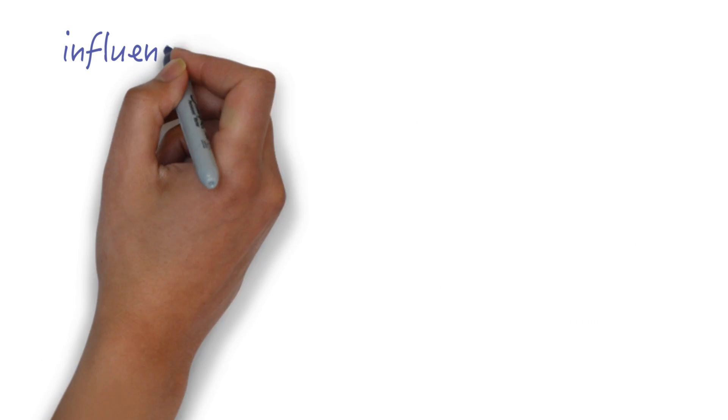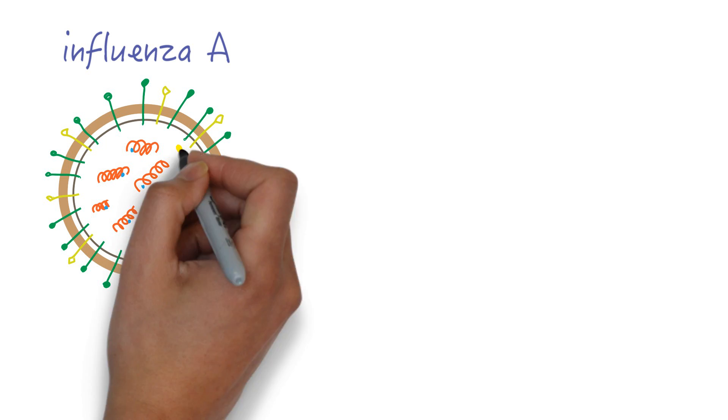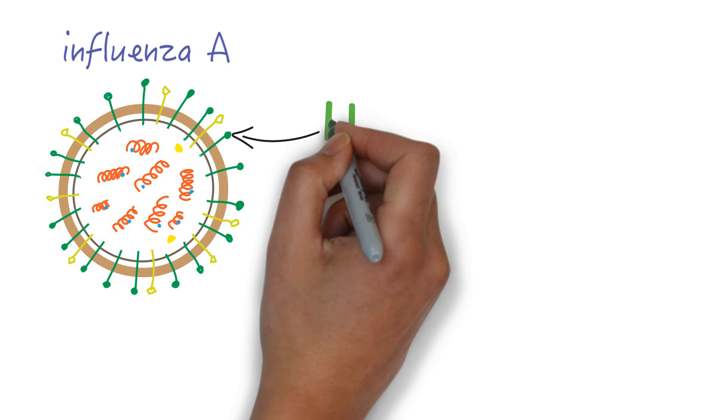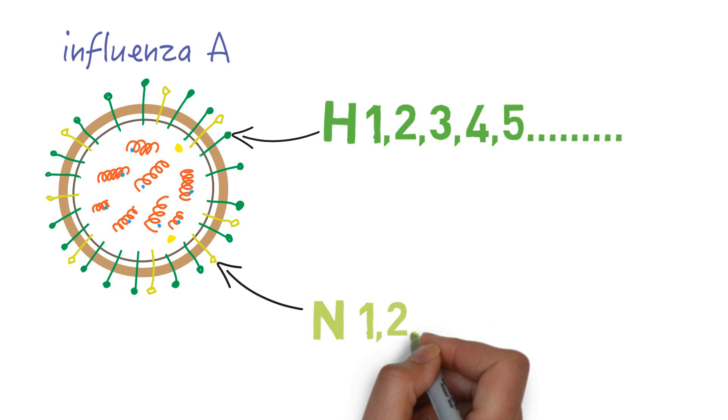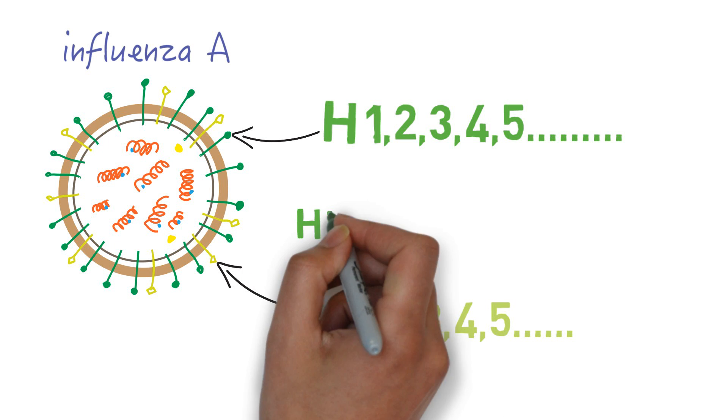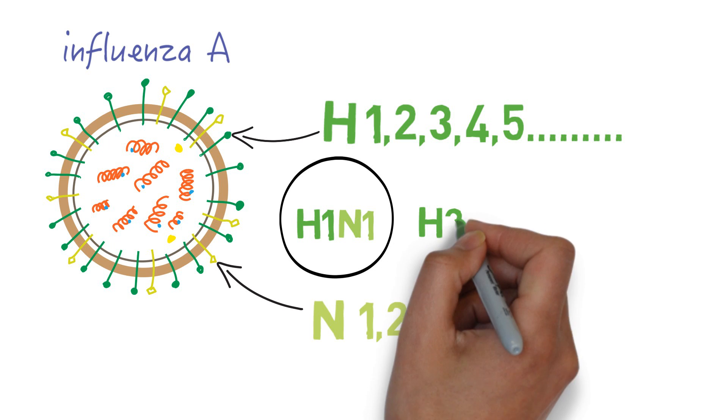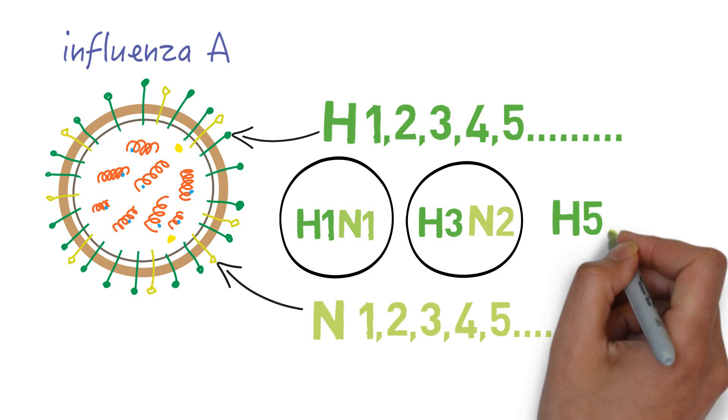Unlike other types, the influenza A virus is further divided into subtypes based on two of its surface proteins, H and N. There are at least 18 H types and 11 N types. Viruses can have several combinations of these two. For example, there can be H1N1, H3N2 or H5N1 viruses.